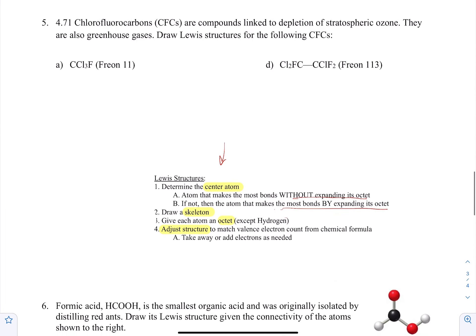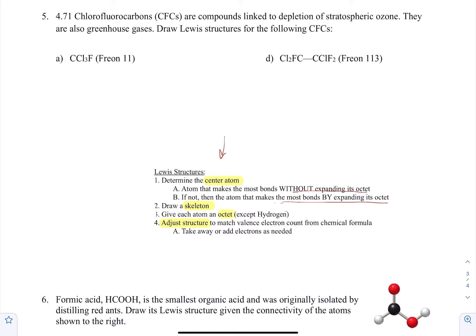On to number five. Chlorofluorocarbons are compounds linked to depletion of stratospheric ozone — they are a greenhouse gas. Draw Lewis structures of the following compounds. Remember, we always assume carbon can be the center atom because it makes the most bonds without expanding its octet first. So carbon in the middle with the halogens on the outside: one fluorine and three chlorines. Even though chlorine can expand its octet, we don't assume it's the center atom until we have to.